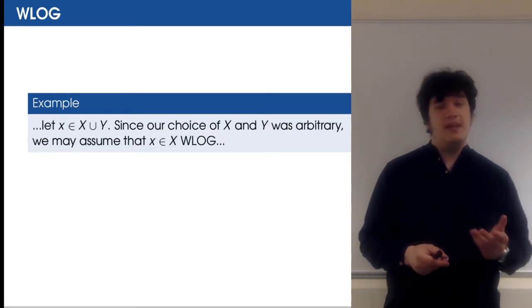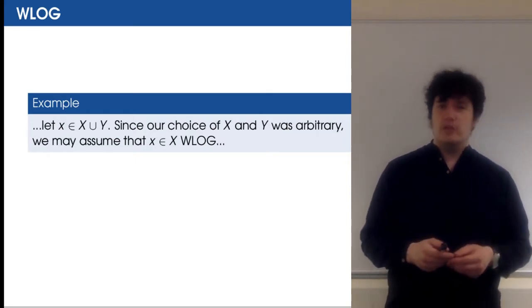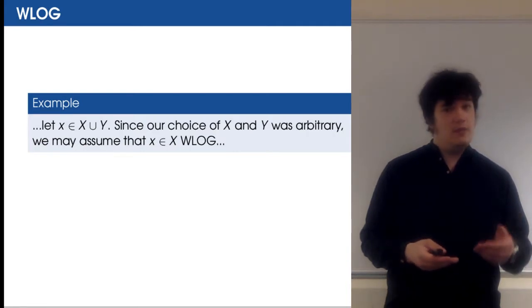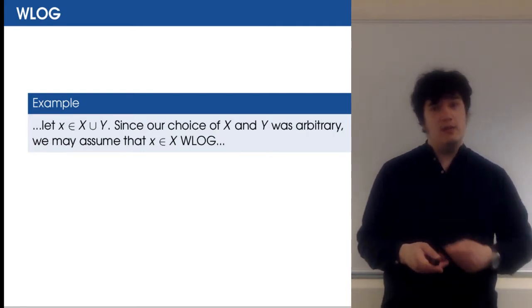Let little x be in big X union Y. Since our choice of big X and Y was arbitrary, we may assume that little x is in big X without loss of generality.